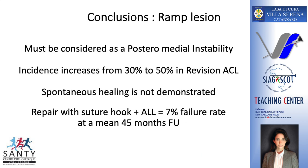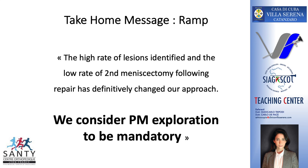The conclusions for ramp lesions: it must be considered as a posterior medial instability. The incidence increases from 30% in primary ACL reconstructions to 50% in revision cases. Spontaneous healing is not demonstrated. The combined repair with the suture hook and the ALL reconstruction decreases the failure rate to 7% at a mean follow-up of 45 months. Our take-home message is that we consider posterior medial exploration to be mandatory in ACL reconstruction, and the high rate of lesions identified and the low rate of secondary meniscectomy following the repair has definitively changed our approach.